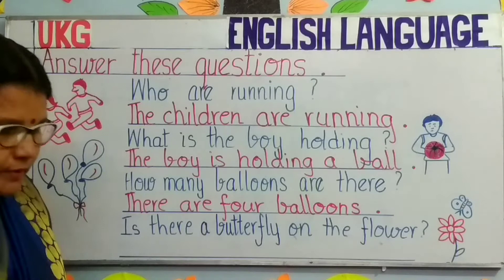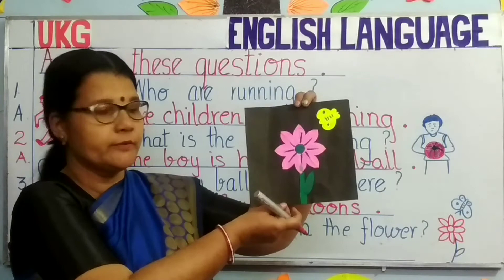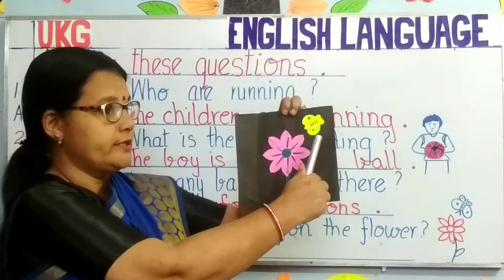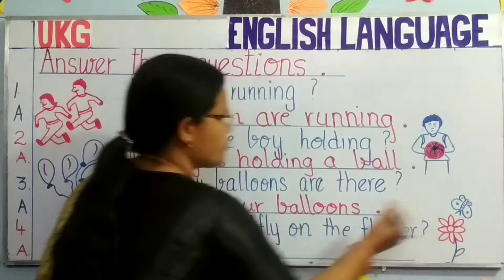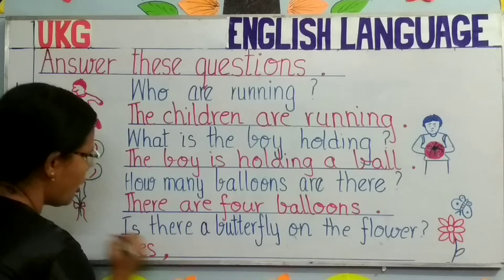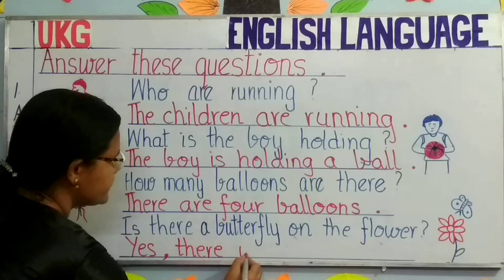The next question now. Look at this picture, children. What do you see? You see a flower and a butterfly. And the question on the board is: Is there a butterfly on the flower? Here you will see a flower and you can also see a butterfly. So you will write: Yes, there is. And then a full stop.